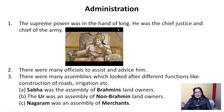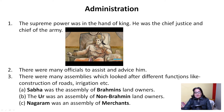About administration: the supreme power was in the hands of the king. He was the chief justice and chief of the army, and there were many officials to assist and advise him. The whole country was divided into provinces. There were many assemblies which looked after different functions, such as construction of roads, irrigation, etc.